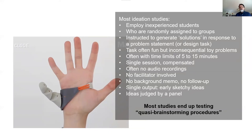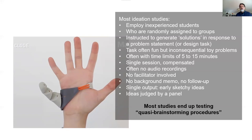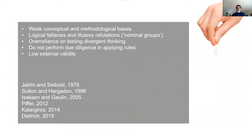Ideation studies usually focus on a single output — early, sketchy, annotated ideas — and these ideas are treated as solutions that are judged by a panel. This is opposed to what Osborne explicitly said: these sessions are not for solving a problem, they are for storming a problem. That distinction is very important.